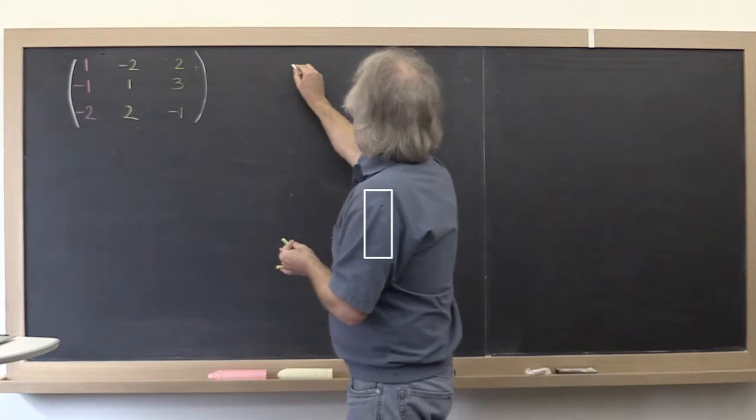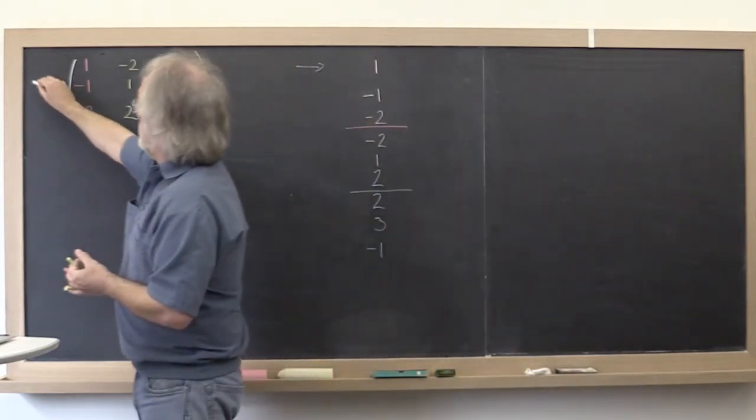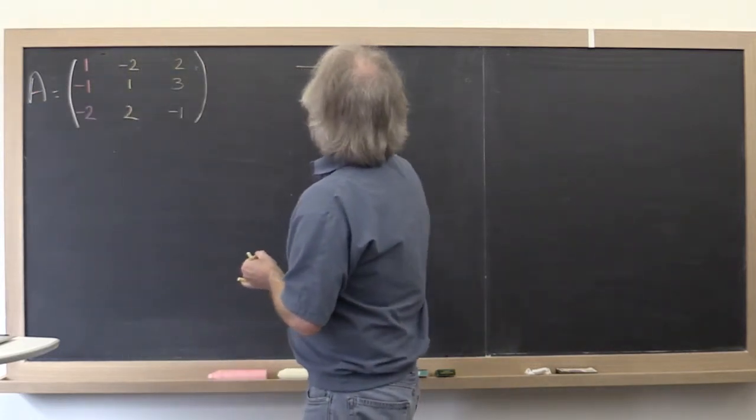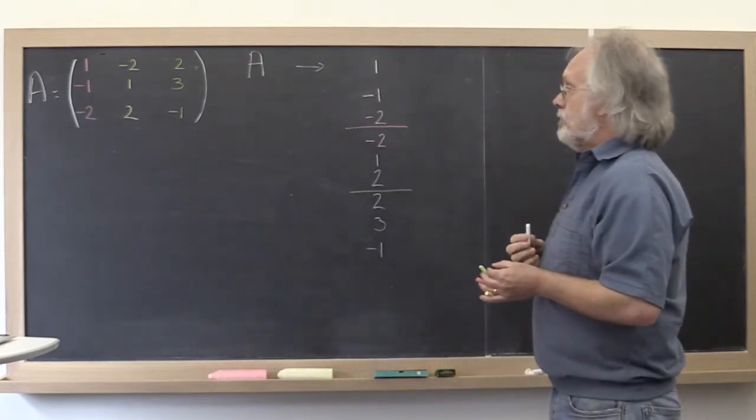If this here is the address where the matrix is stored, so let's call this matrix matrix A, then it may be that this first entry is stored at address A.